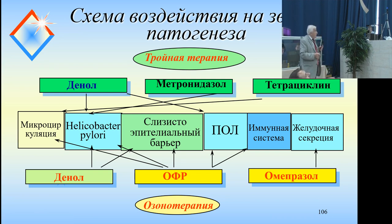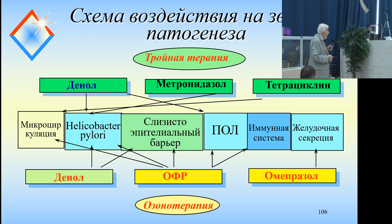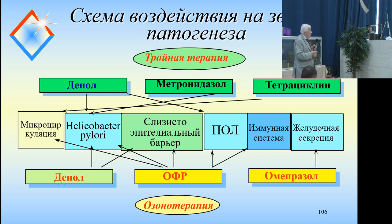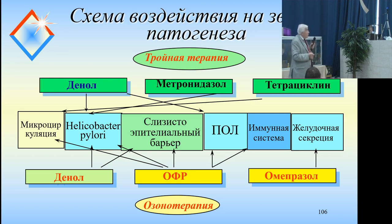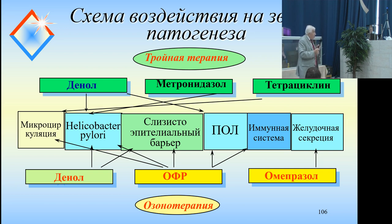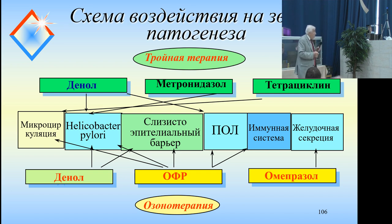Now the question: why does this happen? The upper row shows triple therapy: DNO, metronidazole, tetracycline. In the middle are 6 components of pathogenesis development: microcirculation disturbance, Helicobacter pylori, mucous epithelial barrier, lipid peroxidation (POL), immune system, and gastric secretion. If you look at the upper boundary, you can see that triple therapy practically does not act on all components of this pathology. But when we add ozone therapy — using DNO, ozone therapy, and amiprozol, without any antibiotics — that is, in contrast to Maastricht guidelines — we obtain such a good effect.